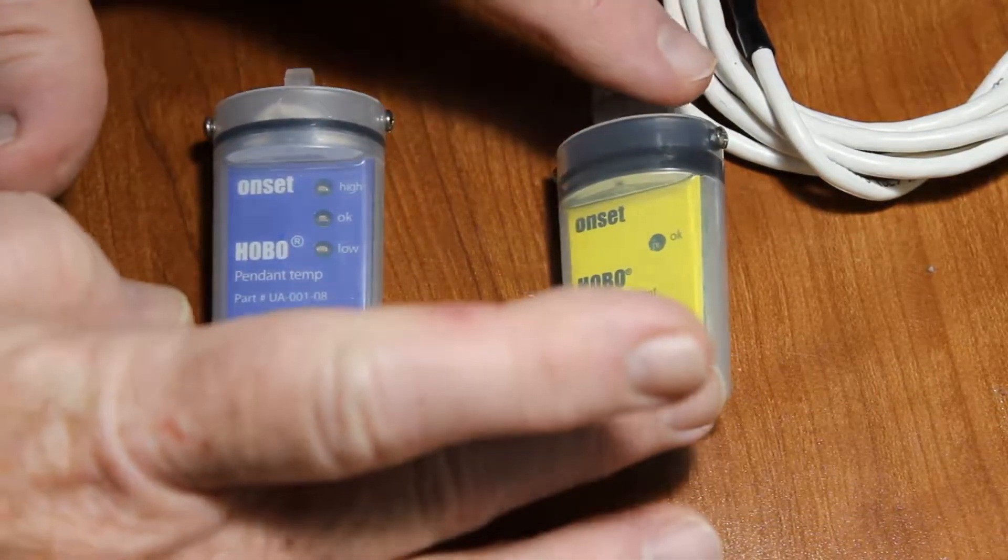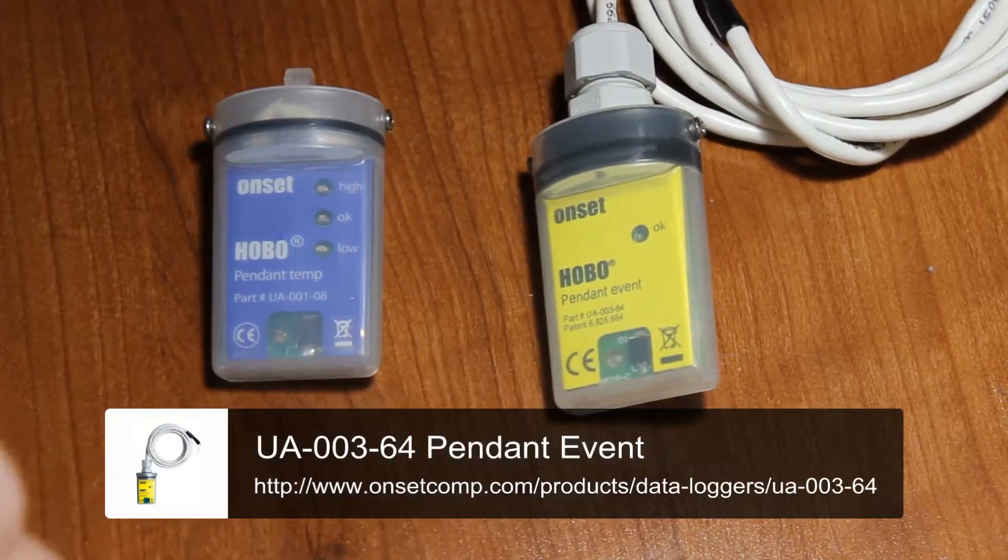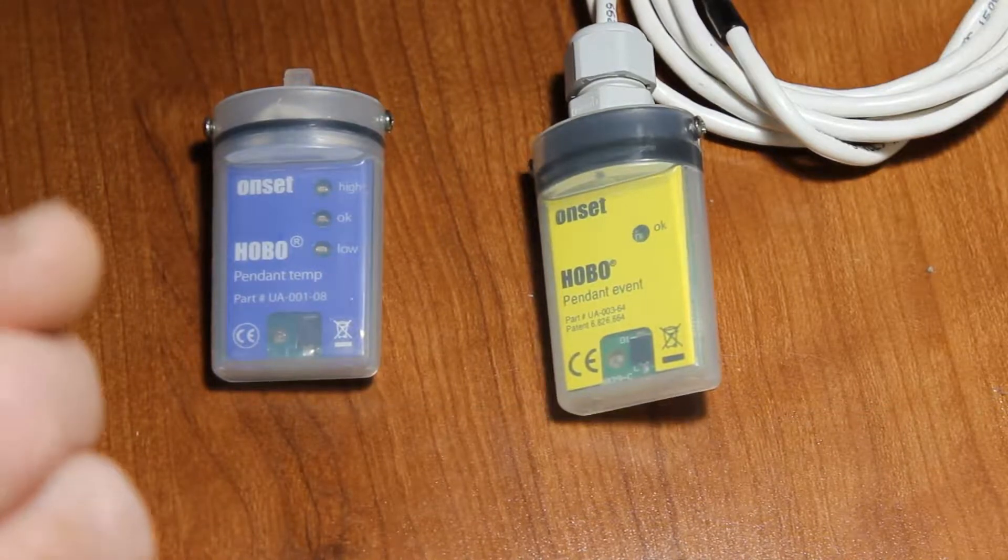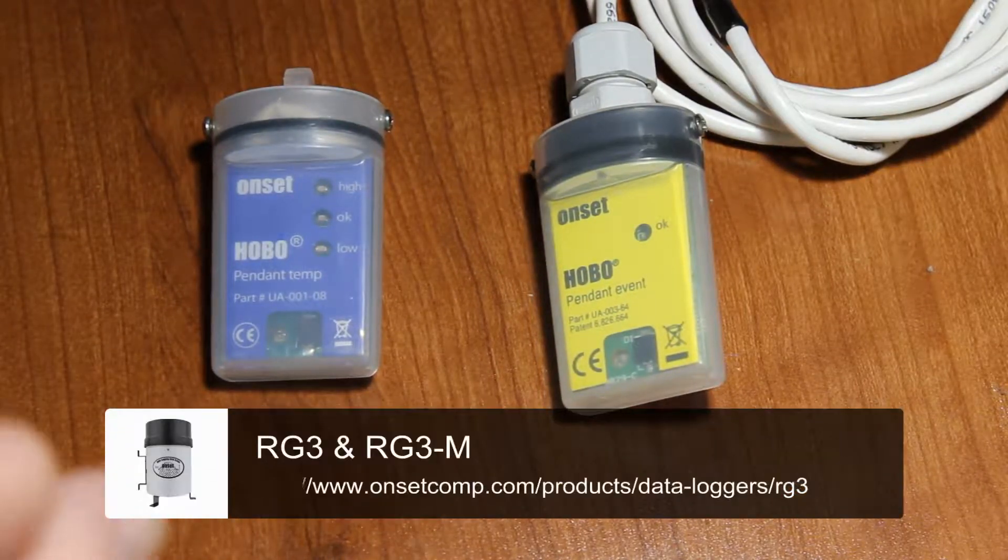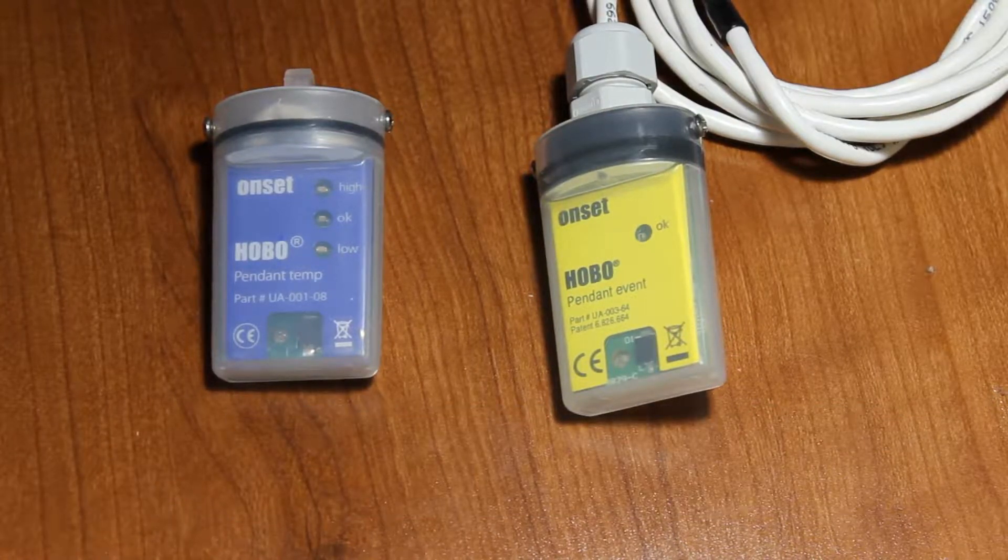And we also have the pendant event logger, which has the cable coming out of it, and that's used in the tipping bucket rain gauge, the RG3 and RG3M. So we're going to talk about replacing the battery in both of these devices.